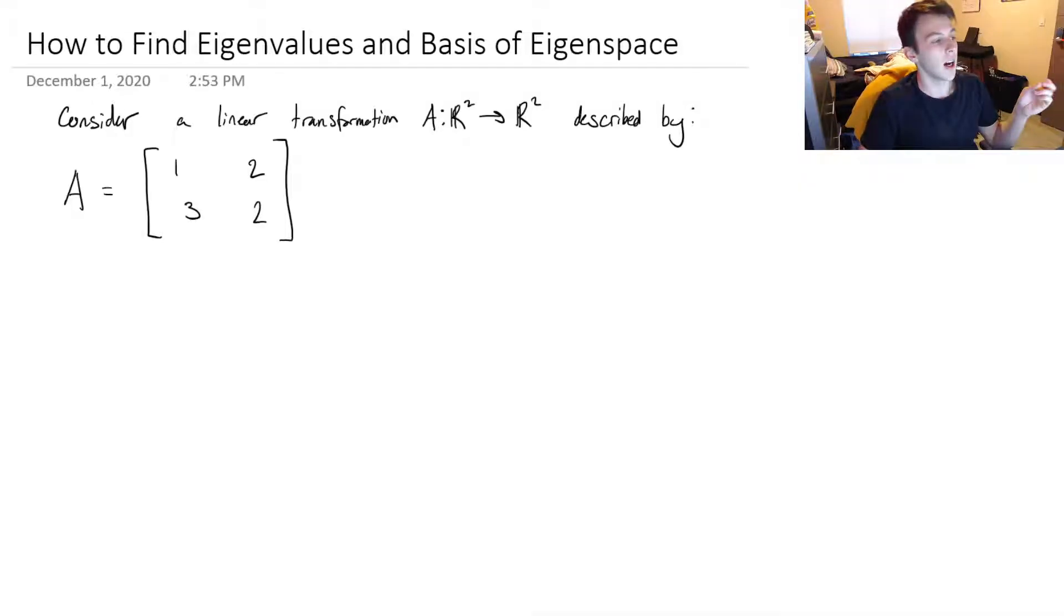So once you've watched that video, come back here and it should make a lot more sense from some of the things that I'm saying. So consider this linear transformation A. It takes a vector in R² and spits out a vector in R², and it's described by the matrix below.